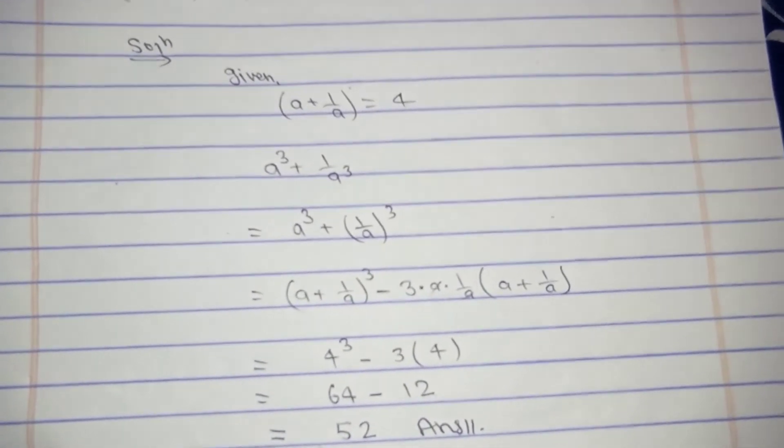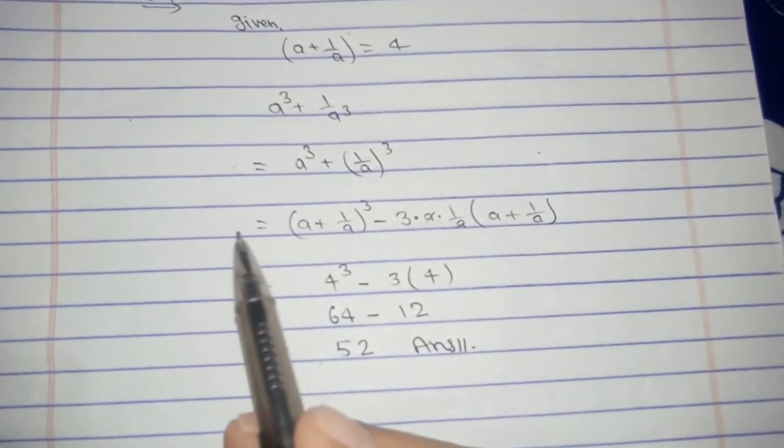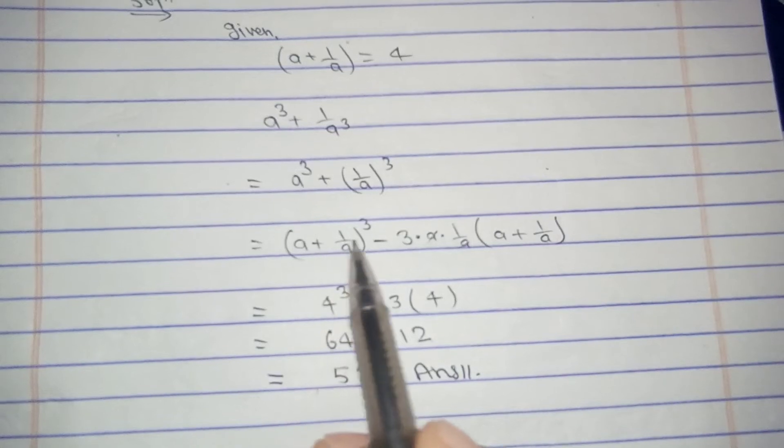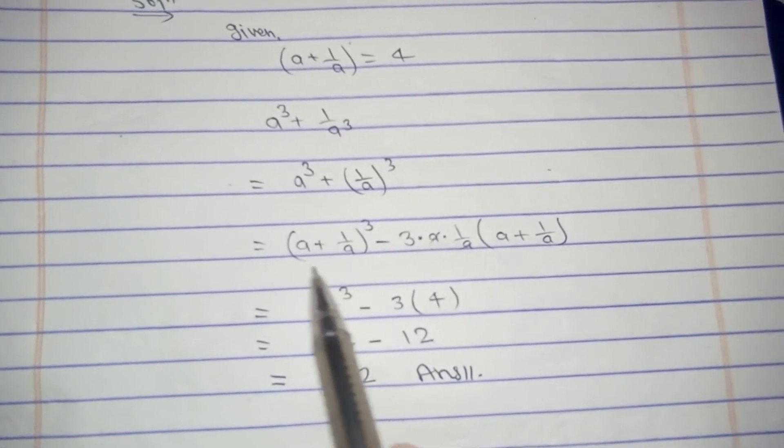If we use this formula for this a cube plus b cube form, then it would be easier for us to solve this numerical. Now just put the value of a plus one by a here for cube.